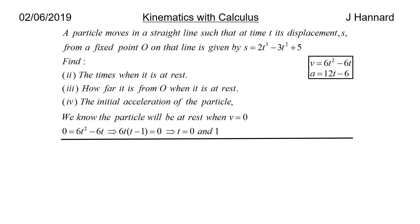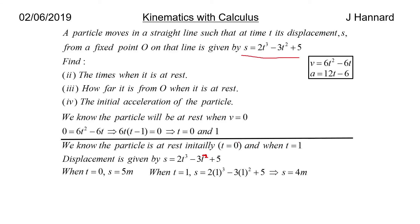Moving on. Part three, how far is it from O when it is at rest? We know the times are zero and one when it is stopped. So we sub those times into our distance or displacement equation and we can work out what s is. We know the particle is at rest initially at t = 0 and when t = 1. So displacement is given by s = 2t³ - 3t² + 5t. We put a zero in and get s = 5. We stick a one in and we get s = 4. So those are the two answers there.